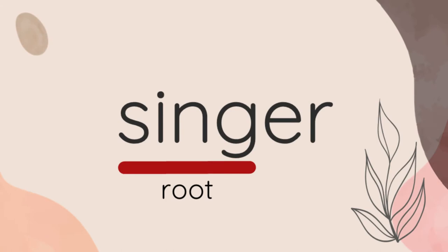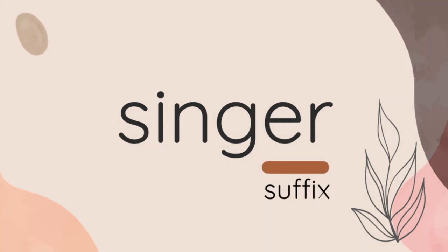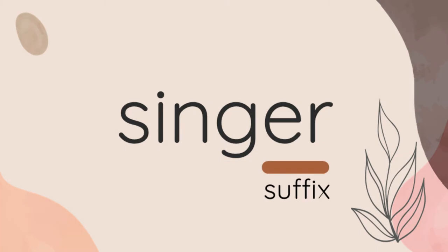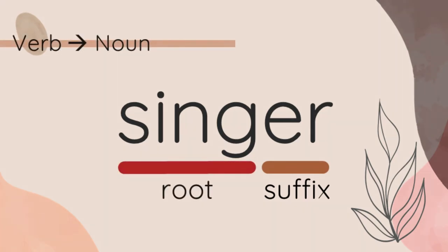Let's move to another example, which is 'singer'. The root of this word is 'sing', then 'er' as a suffix is added. We have 'sing' as the root and 'er' as the suffix. The word class of this word can also change — if previously 'sing' stood alone as a verb, after adding the suffix 'er', now it becomes a noun.